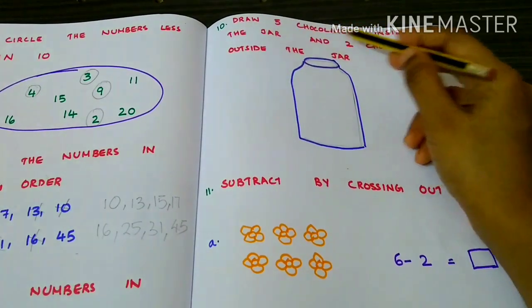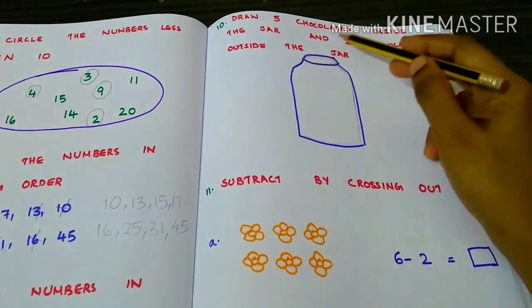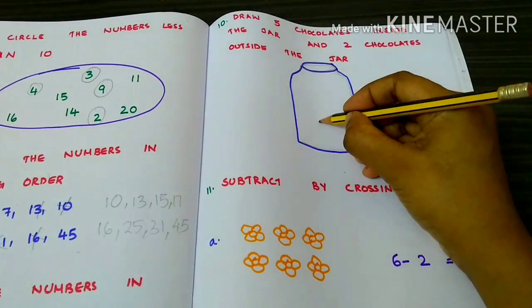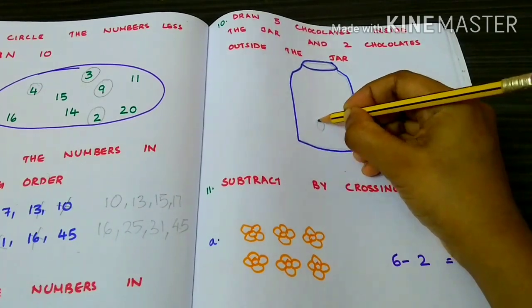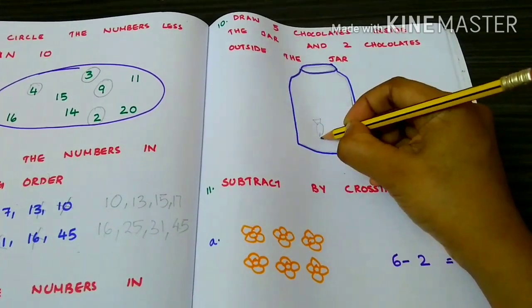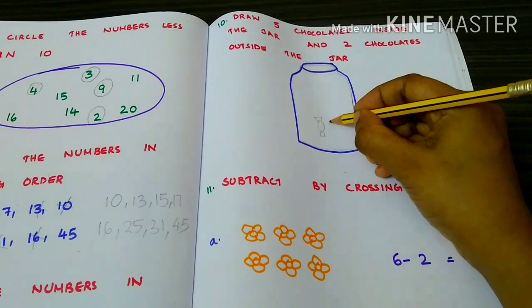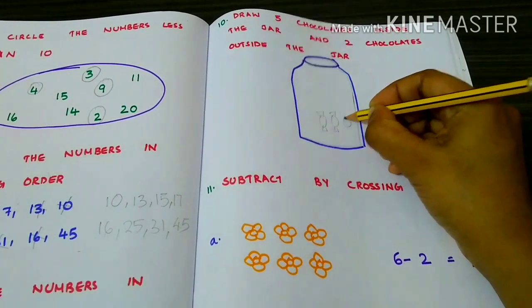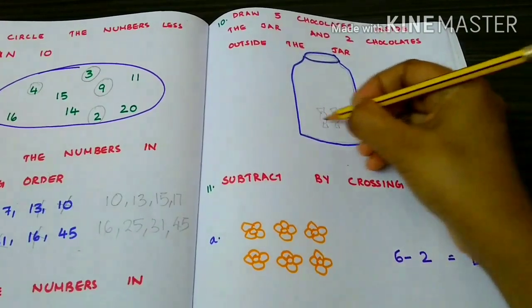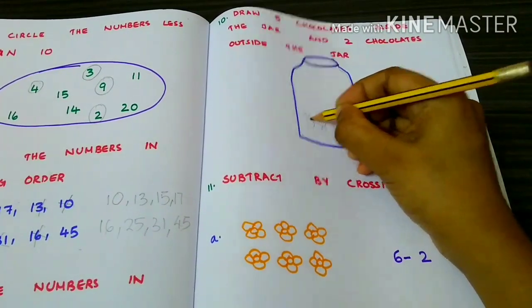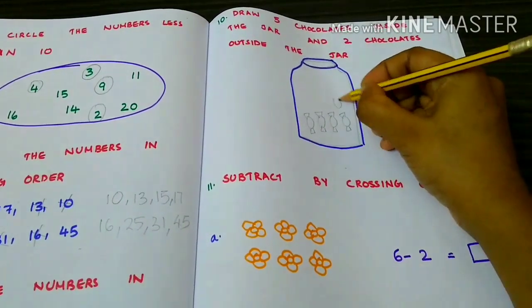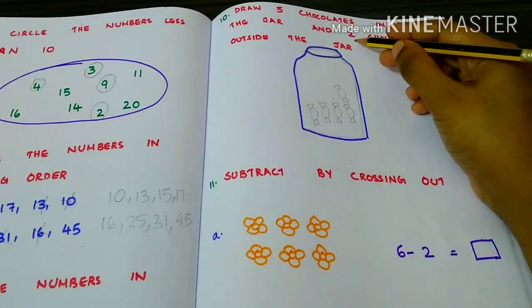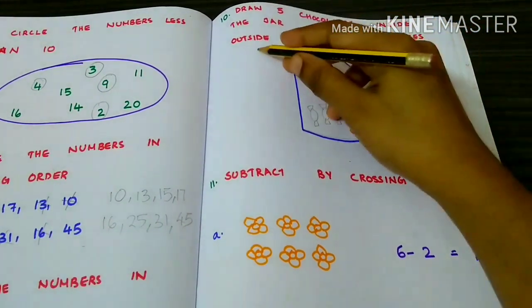Draw 5 chocolates inside the jar and 2 chocolates outside the jar. First, we have to draw 5 chocolates inside the jar — 1, 2, 3, 4, 5. Now we have to draw 2 chocolates outside the jar.